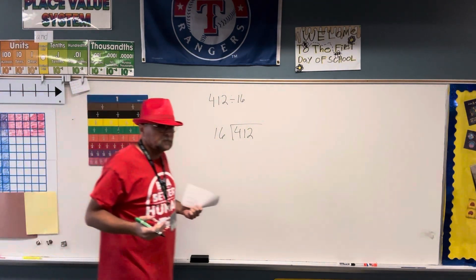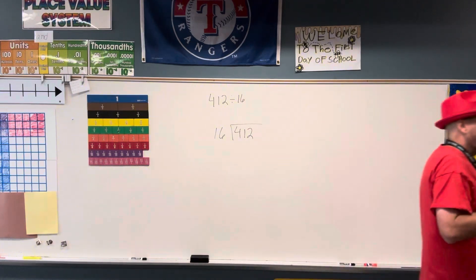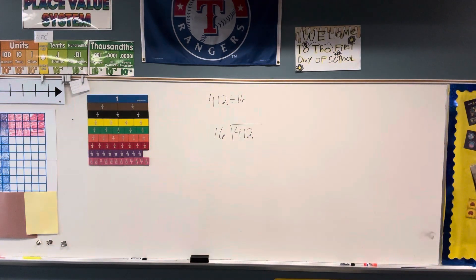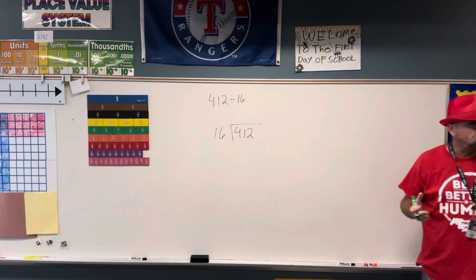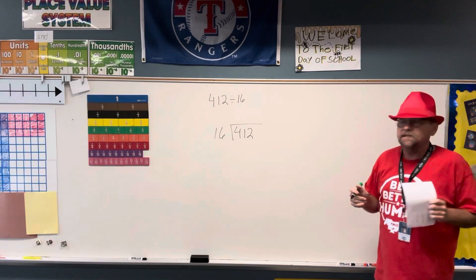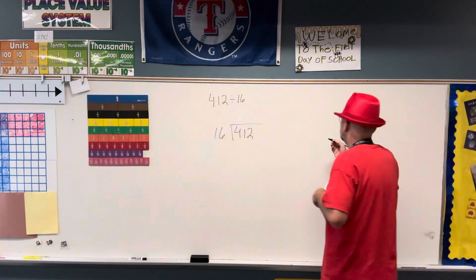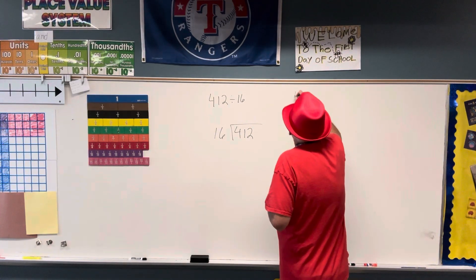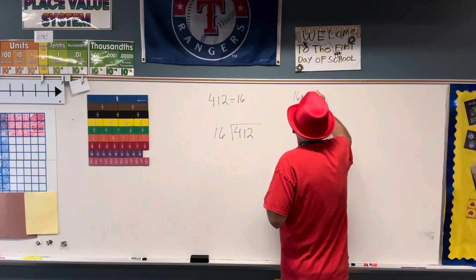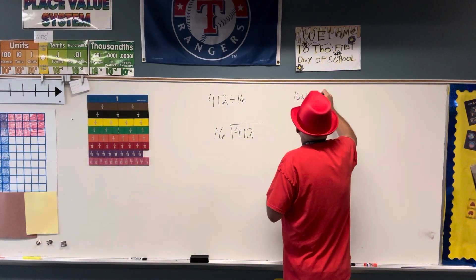Since it's division, and we want to make division as easy as possible, we're going to list our multiples of our divisor, which in this case is 16. So 16 times 1 is 16.